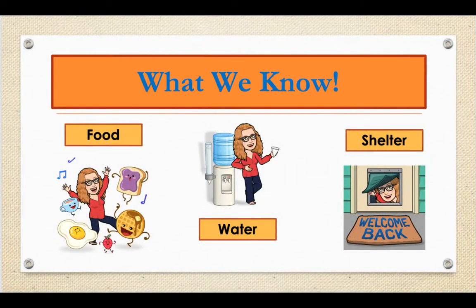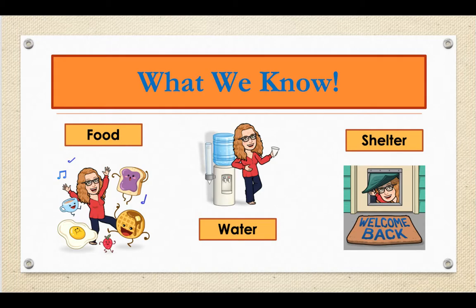Let's remember what we already know. For a habitat to be a good habitat for a plant, an animal, or even us humans, a habitat needs to have food, water, and shelter.